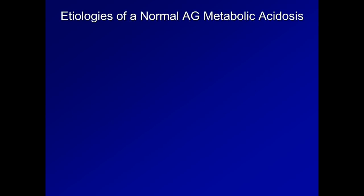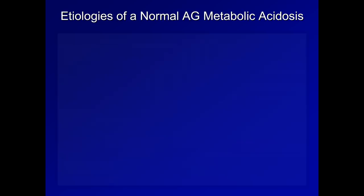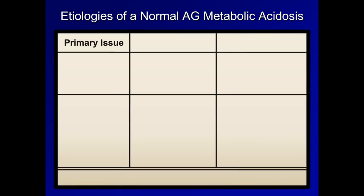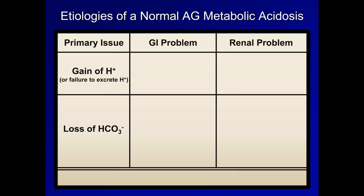There are two major ways to categorize the etiologies of a normal gap acidosis. For the first way, we consider whether the primary problem is located in the GI tract or the kidneys, and whether that primary problem is a gain of hydrogen ions or a loss of bicarbonate. Although calling it a GI problem is a bit of a stretch, hyperalimentation is frequently listed on this differential diagnosis — this basically means that a person is being artificially fed either through tube feeds or TPN at a rate far in excess of what his or her metabolism is able to process. As a consequence of excessive protein loading,